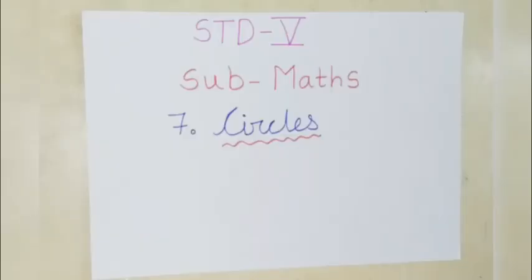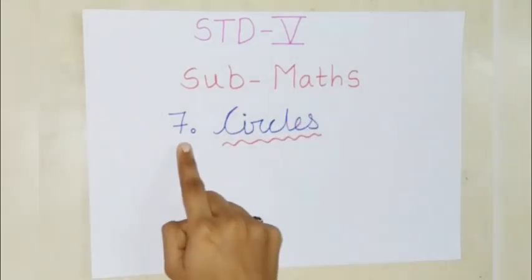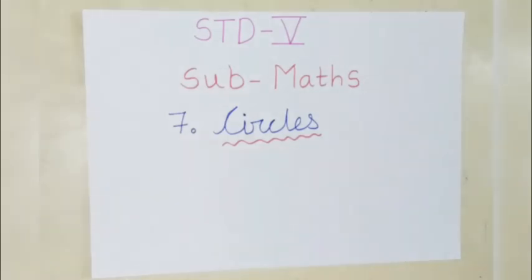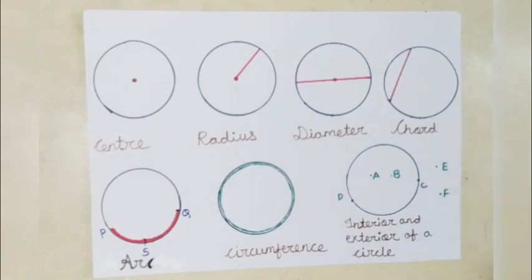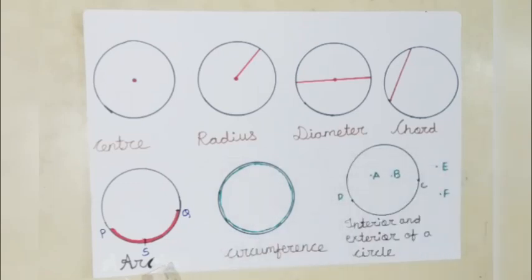Hello students. Our subject for today is Maths, chapter number 7, Circles. In this lesson, we are going to learn about center, radius, diameter, chord, arc, circumference, and interior and exterior of a circle.